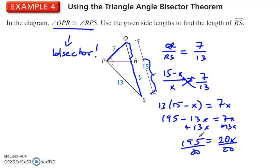And 195 divided by 20 gives me 9.75. X is equal to 9.75.